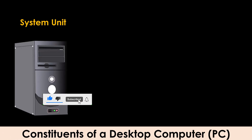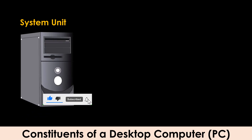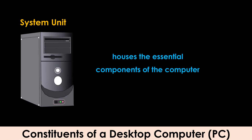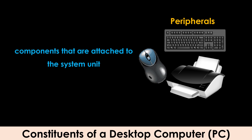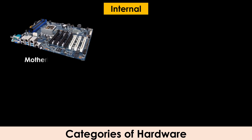For a desktop computer, the hardware can also be explained as consisting of the system unit, which is the part that houses all the essential components of the computer, and peripherals, which are the components that are attached to the system unit.